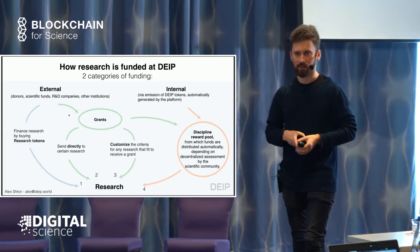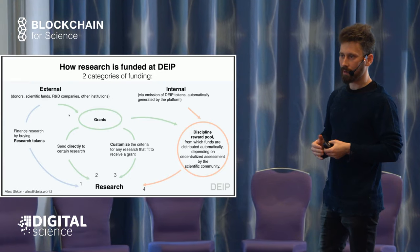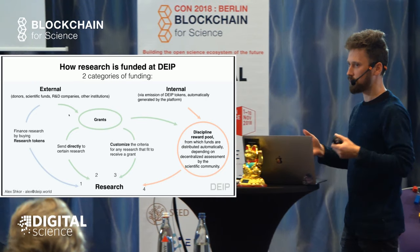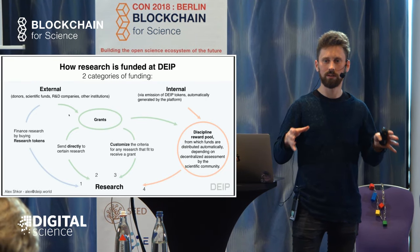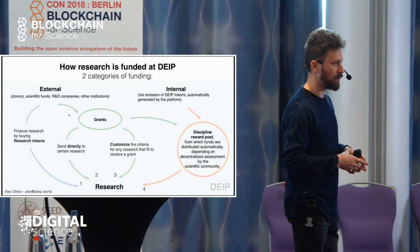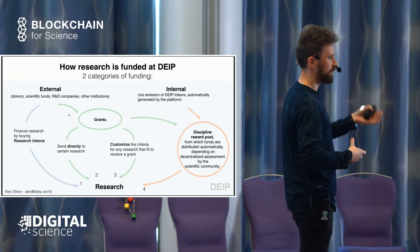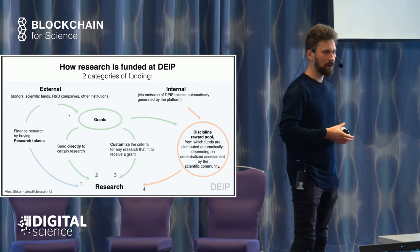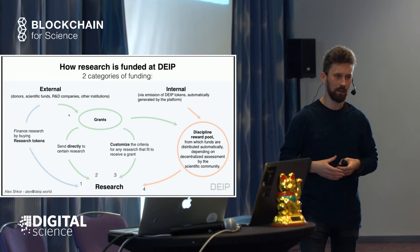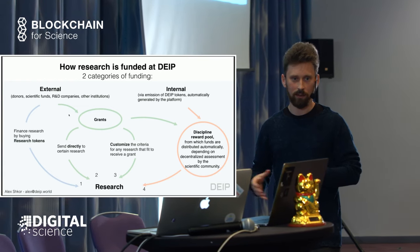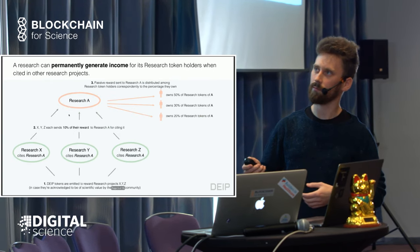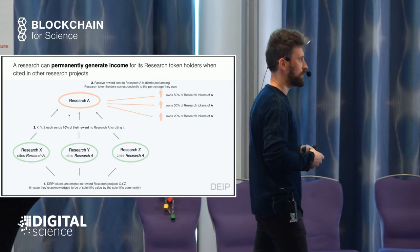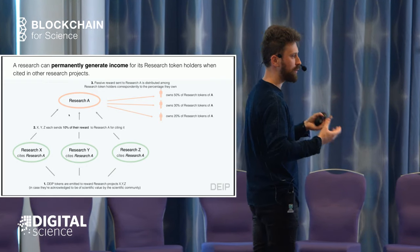To distribute these grants, we actually need a quantified index of scientific contribution of each research. This is what we have done for evaluation of scientific research within our system — we designed a mathematical model which produces a quantified index of scientific contribution of each research within each discipline. Using this quantified index, a smart contract can distribute funds, both from internal currency and from external grants, between research projects. And this also works for basic research, so you can be rewarded even by doing basic research.